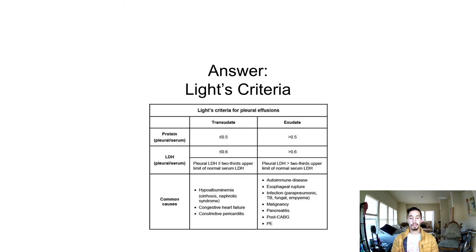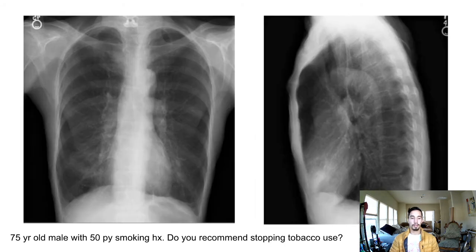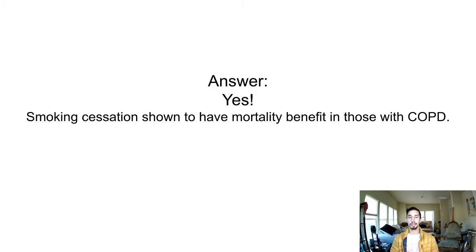For a transudative effusion, you treat the underlying disease — fluid overload from cirrhosis, nephrotic syndrome, or CHF — for example with diuresis. Separately: a 75-year-old with a 50 pack-year smoking history asks if quitting still matters. Yes — smoking cessation has a proven mortality benefit in COPD, as does supplemental oxygen when SpO2 drops below 88%. Know this for the family medicine shelf and Step 2.